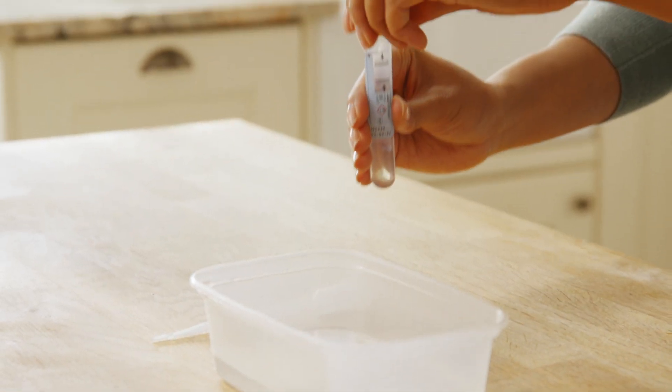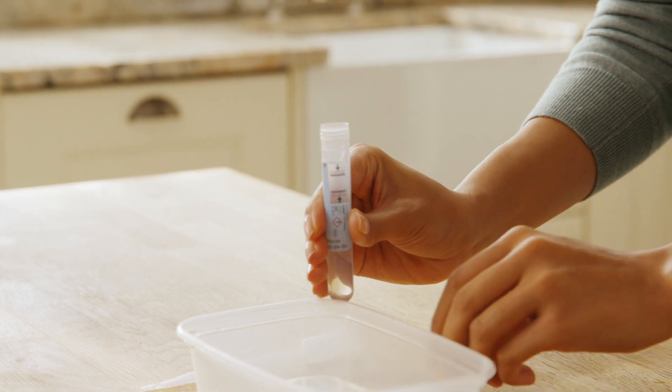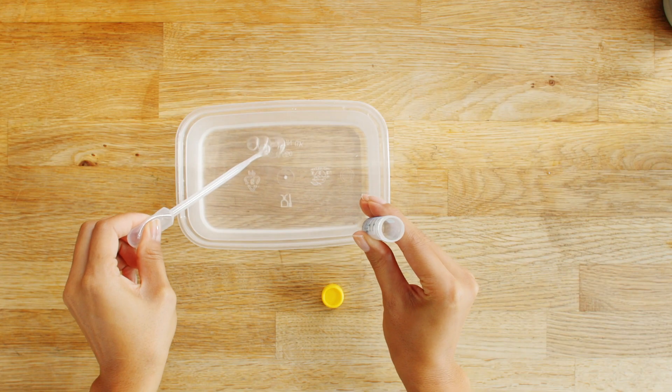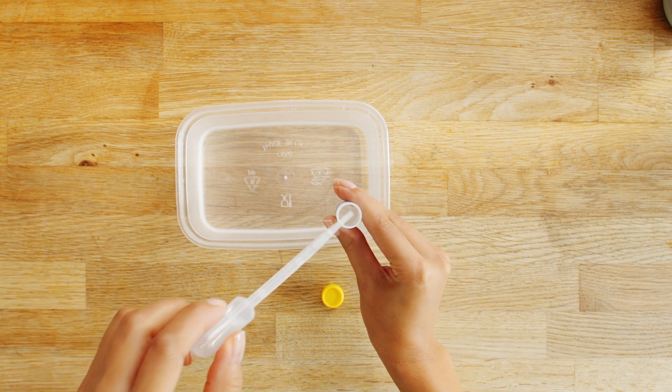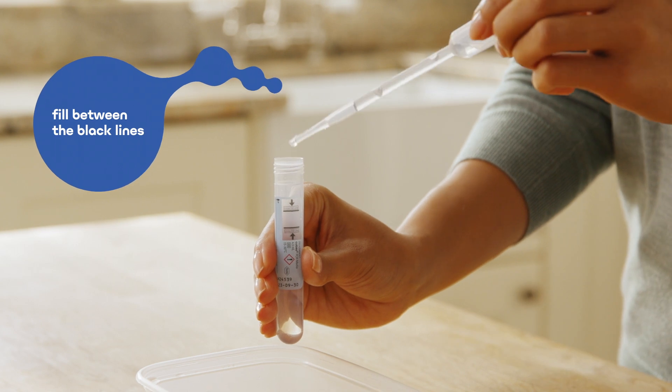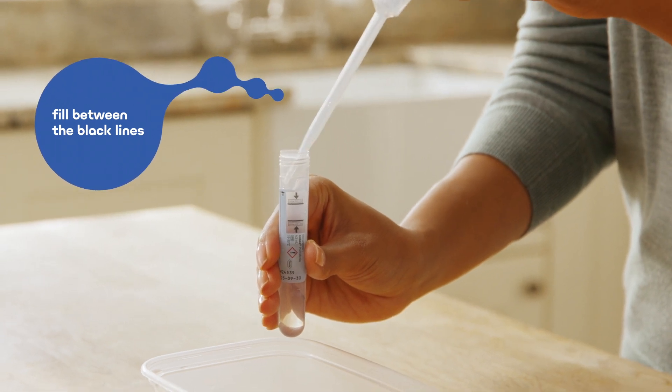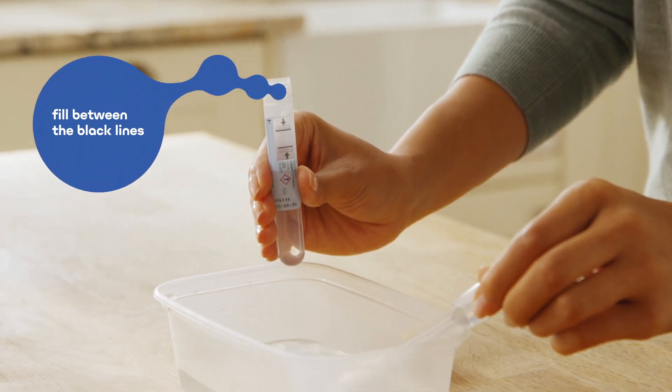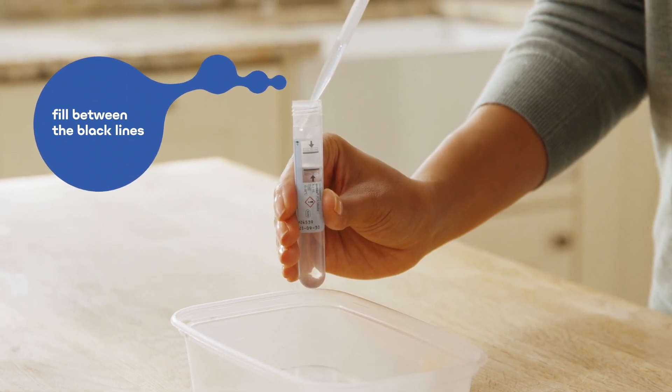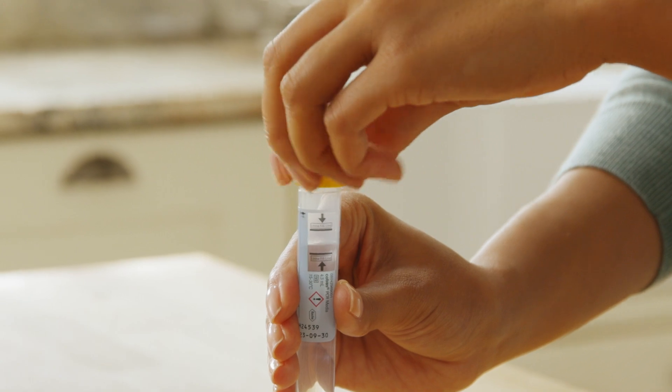Take the urine specimen collection tube with the blue label and remove the lid, taking care not to touch or spill the contents. Once you are ready, take your pipette to your container and gently squeeze the end to draw up the sample. Point the end of your pipette into the specimen transport tube and squeeze the bulb once again to fill the tube until the urine level is between the two black lines. Screw the cap back firmly onto the tube.